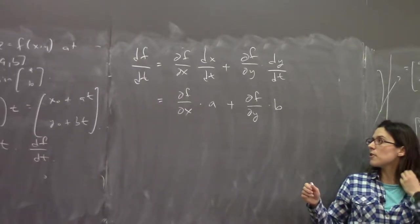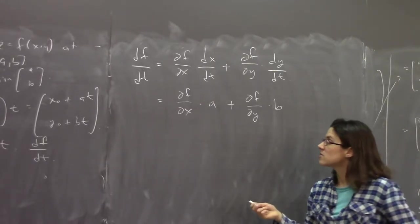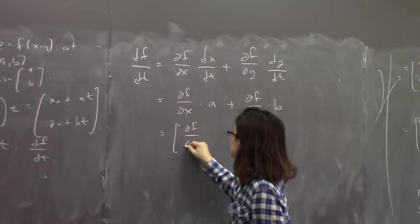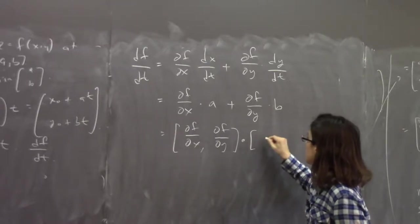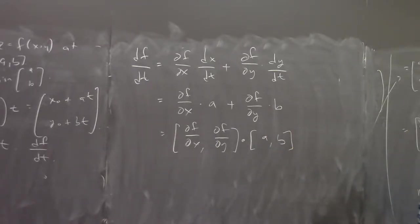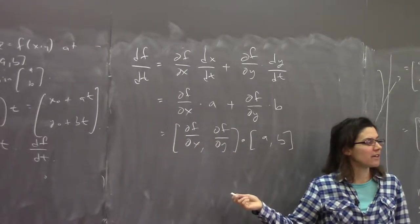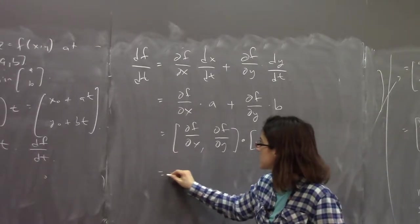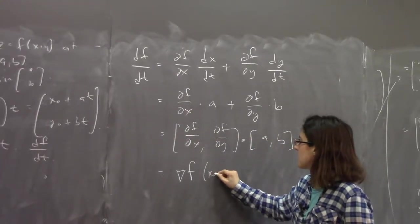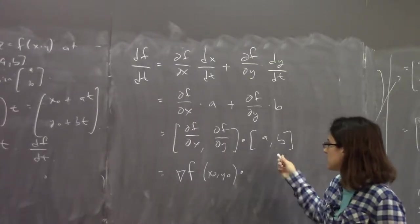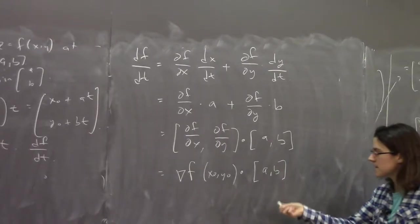This is a dot product trick: (∂f/∂x, ∂f/∂y)·(a,b). And (∂f/∂x, ∂f/∂y) is the gradient of f. So the directional derivative is the gradient of f at (x₀,y₀), dotted with the direction vector (a,b). We always want (a,b) to be a unit vector, because if you scale the direction vector by 100, the slope shouldn't change — it's still the same direction.